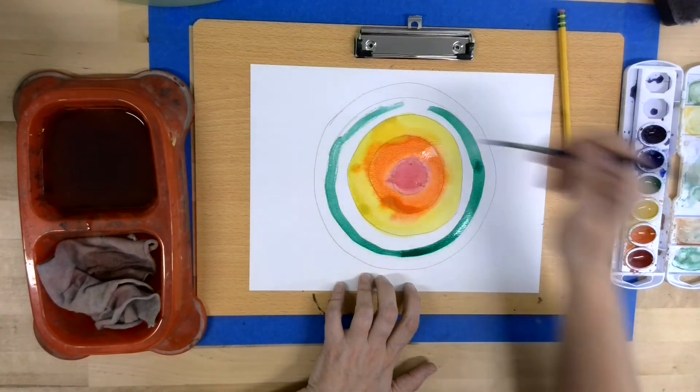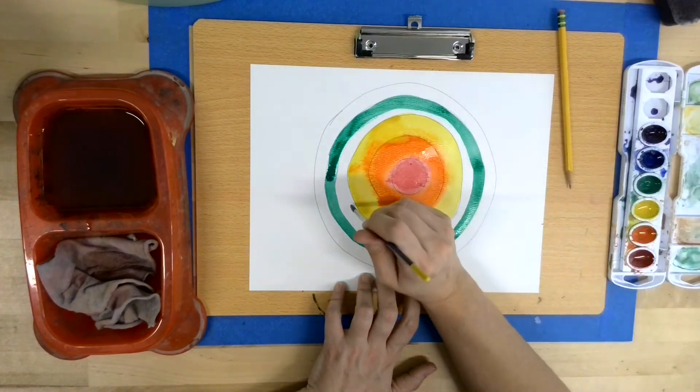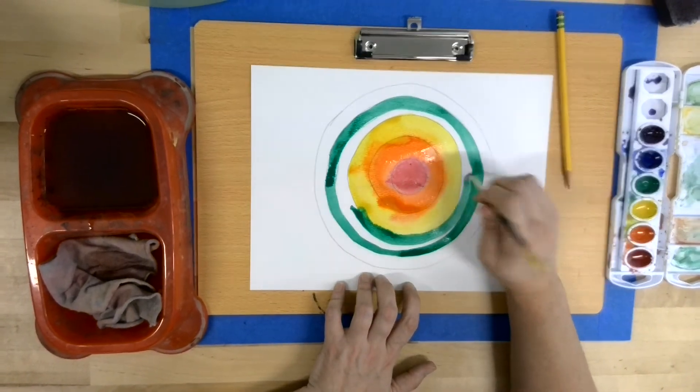You will notice when your brush is thirsty, when it does not allow you to see the color. In this case, add water and add paint.